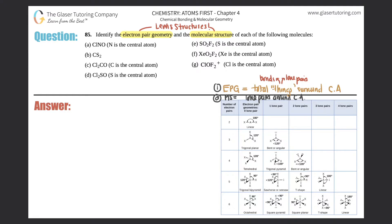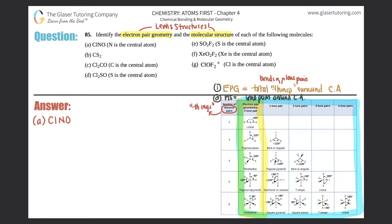Your electron pair geometries only come from five options, but molecular structure could be those five plus many more — much more broad. Electron pairs here means bonds or lone pairs. Let's get started. Part A is ClNO, and they tell you that nitrogen is the central atom.